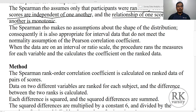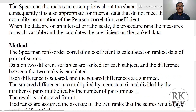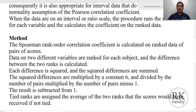The Spearman's rho makes no assumption about the shape of the distribution, whether it is normally distributed or skewed — left skewed or right skewed. It does not matter when running a Spearman's correlation. Even if your data is on an interval or ratio scale, you can still use Spearman's rank correlation.